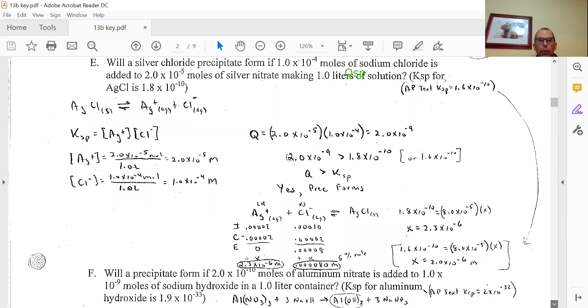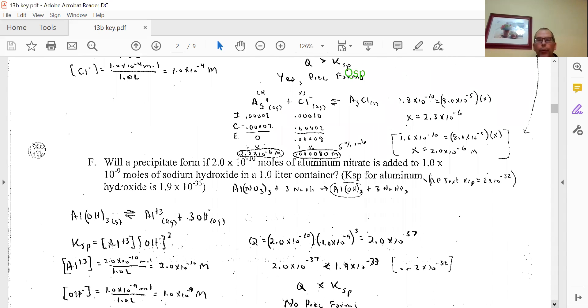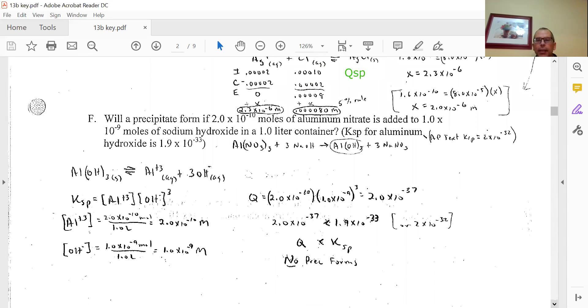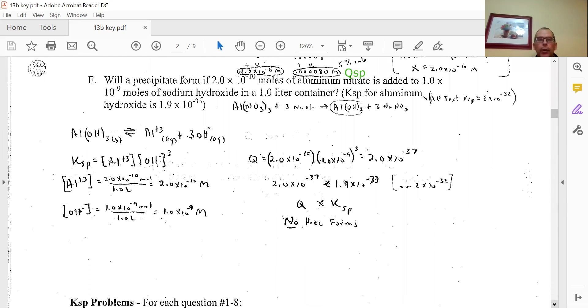Let's go to one more where the ratios aren't all 1:1. Will a precipitate form if 2×10^-10 moles of aluminum nitrate is added to 1×10^-9 moles of sodium hydroxide, and we're considering aluminum hydroxide? Do you need to write the whole equation out? No, you don't need to.